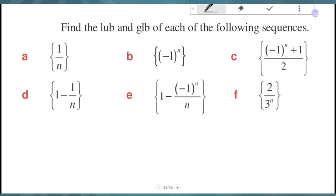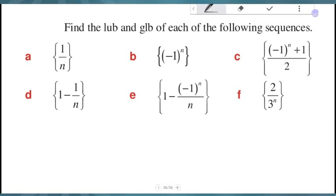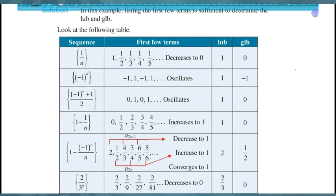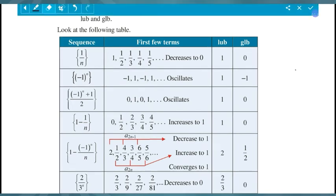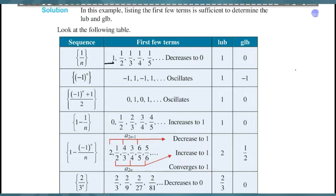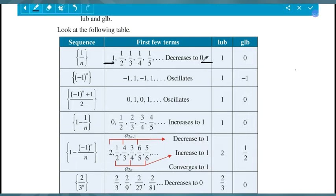What I got in the example: find the least upper bound and the greatest lower bound of each of the following sequences. In this example, listing the first few terms is sufficient to determine the least upper bound and greatest lower bound. For sequence 1/n, it decreases to 0.